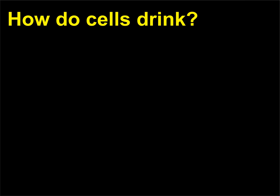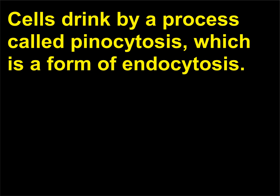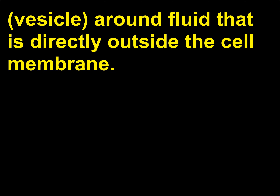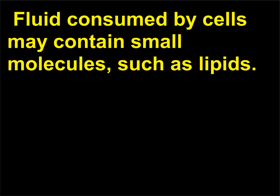How do cells drink? Cells drink by a process called pinocytosis, which is a form of endocytosis. During pinocytosis the cell membrane folds inward, forming a small pocket — a vesicle — around fluid that is directly outside the cell membrane. Fluid consumed by cells may contain small molecules such as lipids.